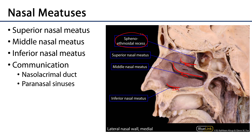Within these meatuses are communications with paranasal sinuses. The sphenoethmoidal recess contains the ostium, or the opening, to the sphenoid sinus. The superior meatus can communicate with some of the ethmoid cells of the ethmoid sinus. The middle nasal meatus can communicate with the frontal sinus through the ethmoidal infundibulum, as well as the maxillary sinus, as well as some of the ethmoidal sinuses — so there's a lot going on in that middle nasal meatus. The inferior nasal meatus receives the nasolacrimal duct from the medial canthus of the eye, so we have a lot of communications moving mucus and lacrimal fluid between other regions and the nasal cavities.